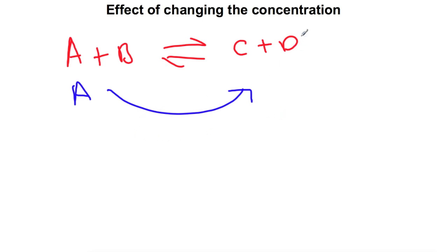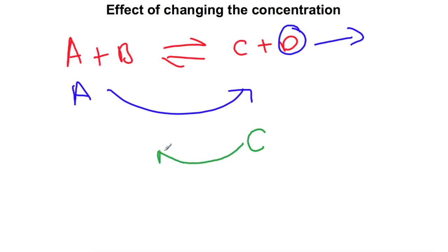The same thing would happen if I were to take away the D — the equilibrium would try to replace the D by pushing the equilibrium to the right-hand side. If we were to do the opposite and add in one of the products, so if I were to add in some more C, the equilibrium would try to regain its balance by pushing the backwards reaction more and therefore producing more reactants. If we were to take away some of the A, this would also have the same effect as C and D would react to produce more A.